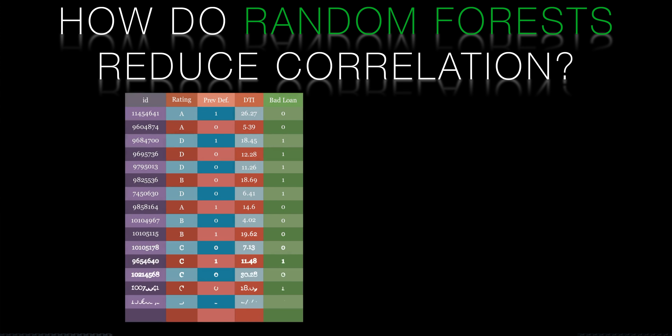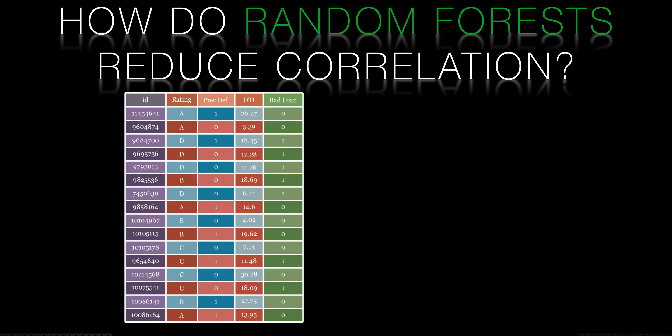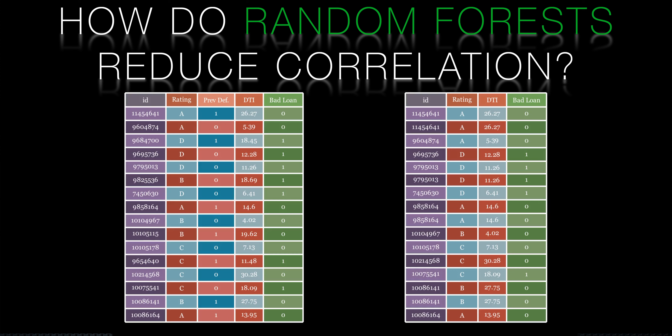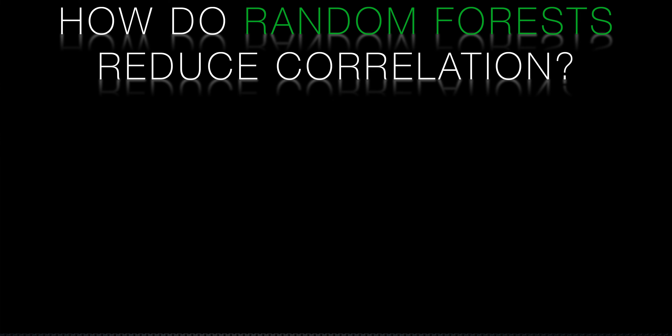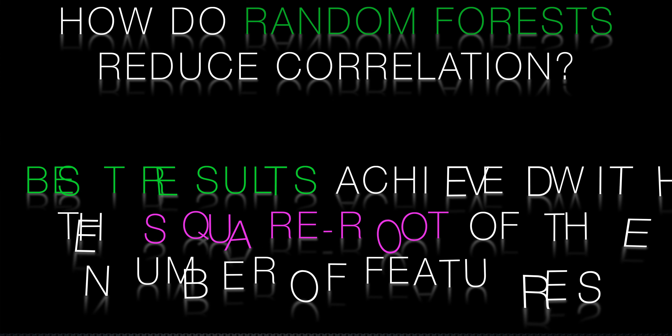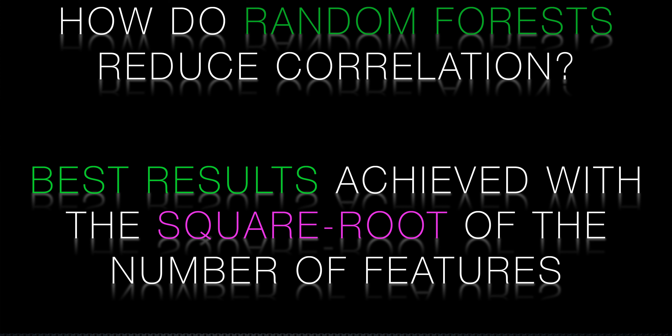The same thing will happen with random feature selection. By reducing the features available to be used for branch splits we end up with a different set of decisions and hence a different tree. You can vary the number of features selected — and indeed you should — to see what gives the best results. There's a strong mathematical consensus that the best choice is to keep the square root of the number of features. For our loan data set that would mean sticking with about three or four features for each split.